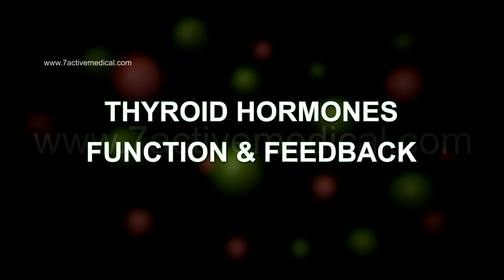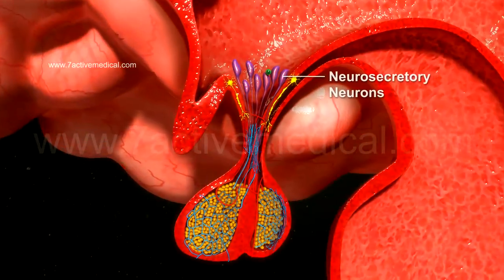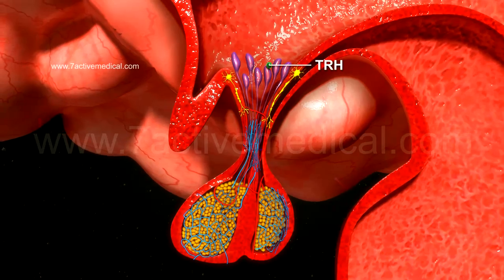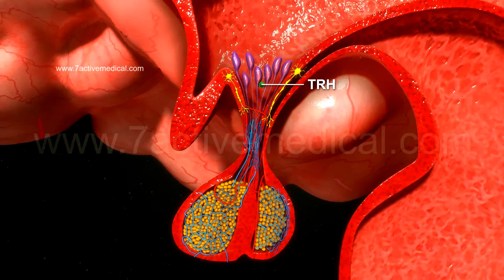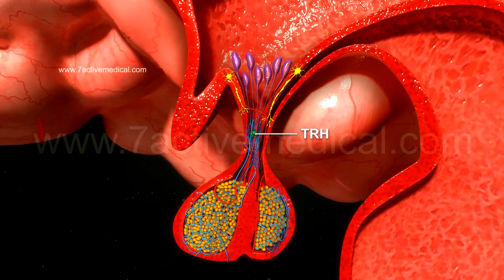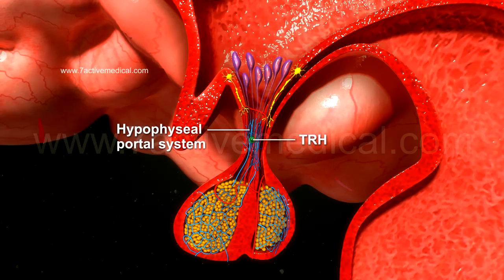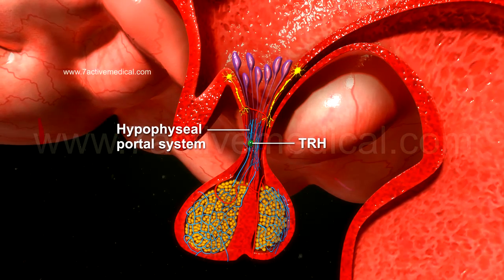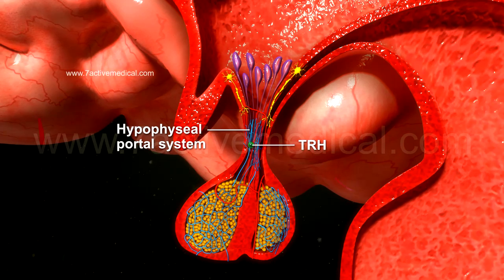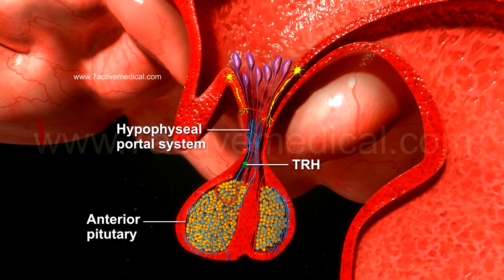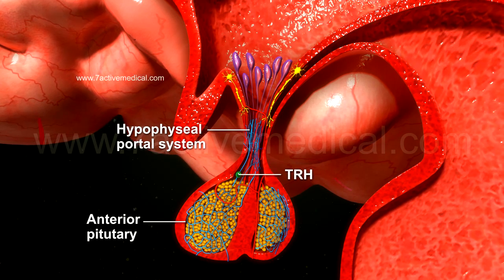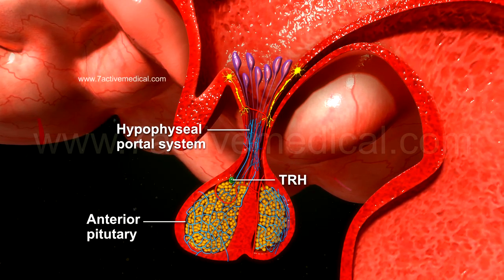When the neurosecretory neurons of the hypothalamus secrete thyrotropin-releasing hormone, or TRH, this TRH travels down to the axon terminal of the neurons, where it is released to enter the hypophysial portal system of the brain. This hypophysial portal system is essentially a bridge between the hypothalamus and the pituitary gland, particularly the anterior portion, passing through its network of capillaries to reach the anterior pituitary.